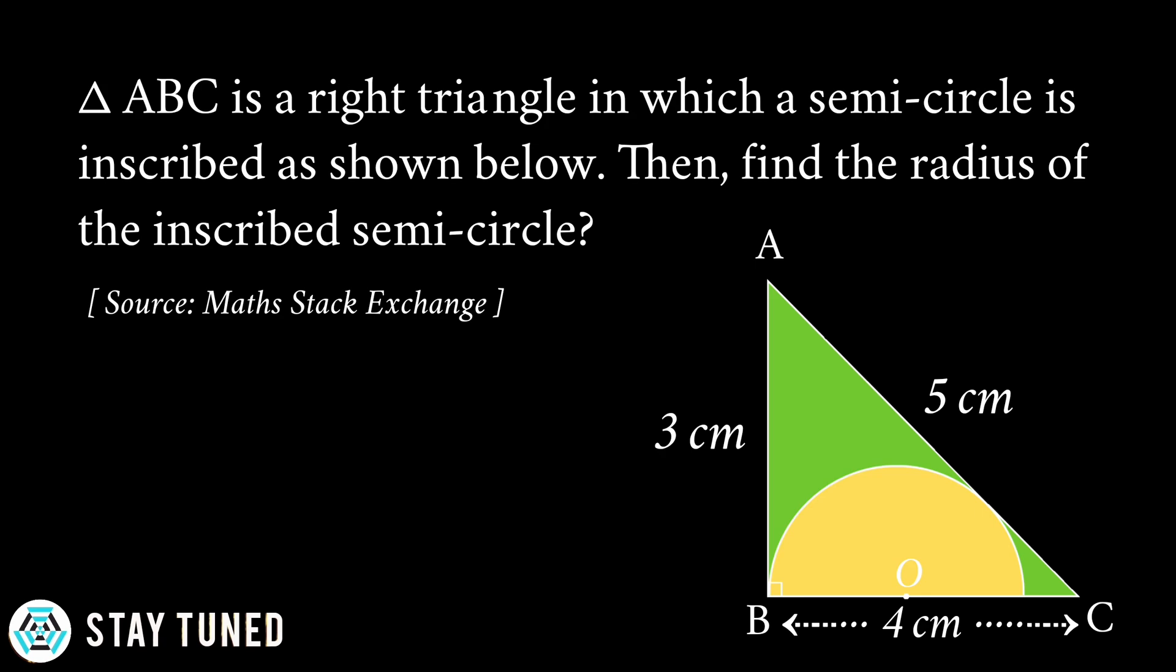Here I have a question. Triangle ABC is a right-angled triangle in which a semicircle is inscribed as shown below. Then find the radius of the inscribed semicircle.